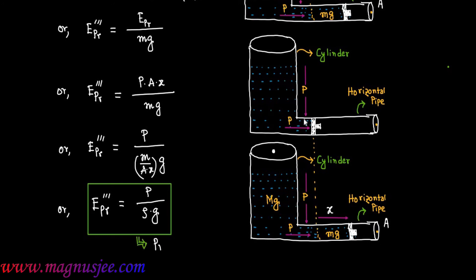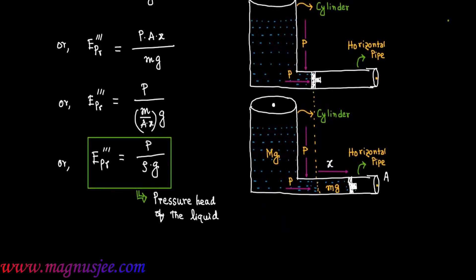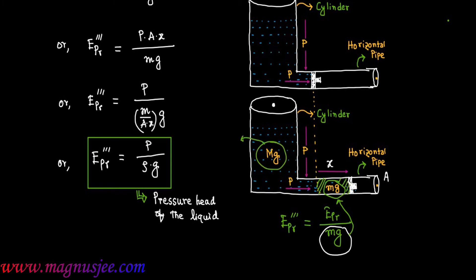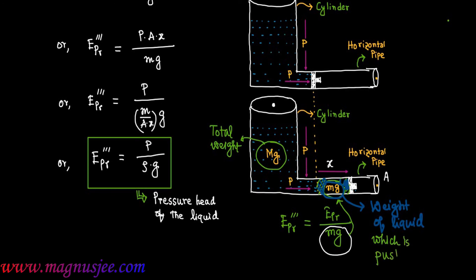EPR triple prime equals P divided by rho G — pressure divided by density into acceleration due to gravity — which is the pressure head of the liquid. Here, small mg is the weight of liquid displaced through the horizontal pipe due to the pressure difference, and capital Mg is the total weight of liquid placed in the vertical cylinder.